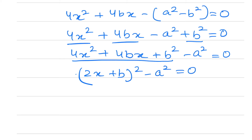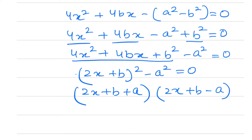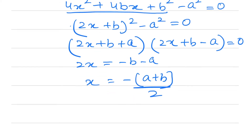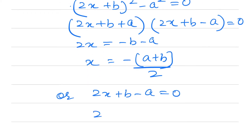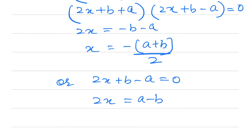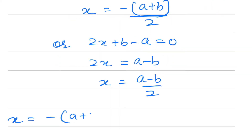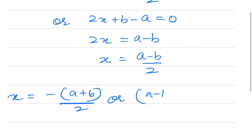Using the difference of squares identity: (2x + b + a)(2x + b − a) = 0. So 2x = −b − a, giving x = −(a+b)/2, or 2x = a − b, giving x = (a−b)/2. Therefore x = −(a+b)/2 or x = (a−b)/2.